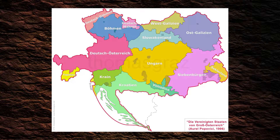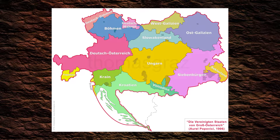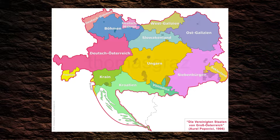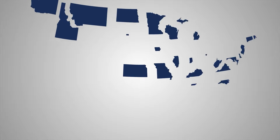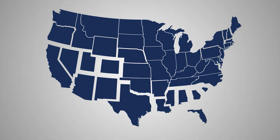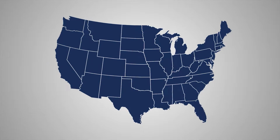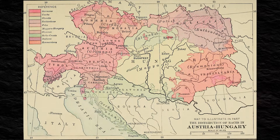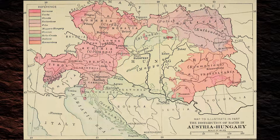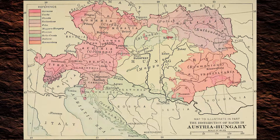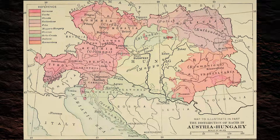In order to unite all the ethnic groups and nations of the multi-ethnic state, a plan was drawn up based on the model of the United States of America. It was supposed to keep Austria and Hungary together and guarantee their status as a great power for a long time.